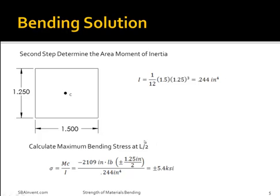Now that we know what the moment is and the area moment of inertia is, we are almost ready to solve for the normal stress on this particular beam. The only thing left that we have to do is to determine what this constant c is. Since we're looking for the maximum bending stress, we have to determine what the maximum distance is from the neutral axis, which would run through the centroid of this part. Since this centroid is directly halfway through this 1.25 inches, c could be plus or minus 1.25 divided by 2. Now that we know what c is, the maximum bending stress for this particular case would be plus or minus 5.4 ksi.